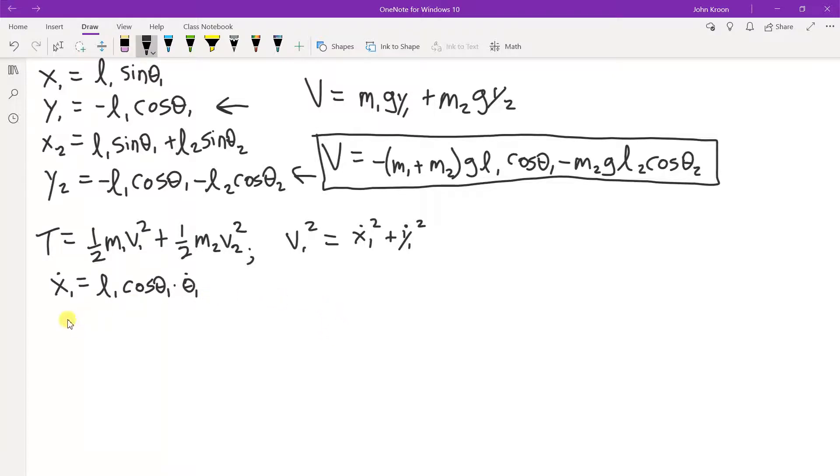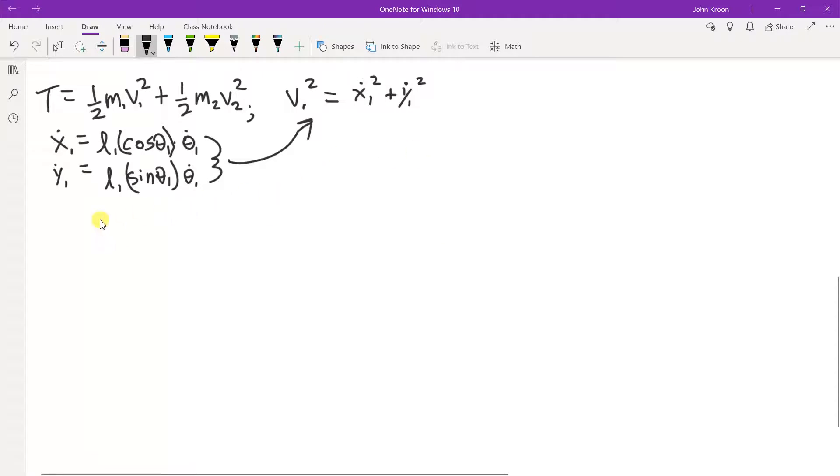And for y1 dot, you have, what's the derivative of cosine? Minus sine. So we get L1 sine theta 1 theta 1 dot. And these are outside of the argument of the trig function. And you'll do the same thing for y2 and x2. And you'll plug them into here. And when you do that and combine all the like terms, I'll show you the final result.